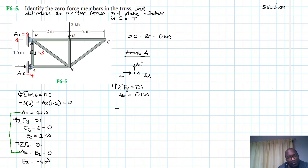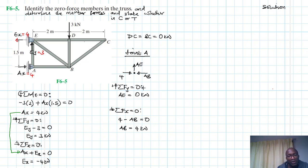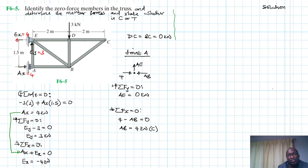Summation of forces in the X direction at joint A equals zero: 4 minus AB equals zero, therefore AB equals 4 kN. Since the sign has not changed, the assumed direction for AB is correct and it is in compression. We are done with joint A and will move on to another joint.